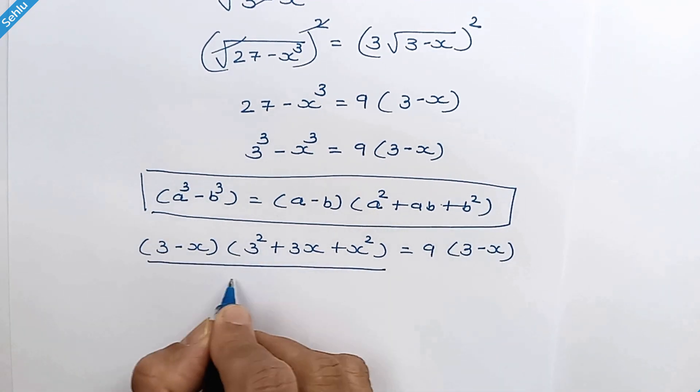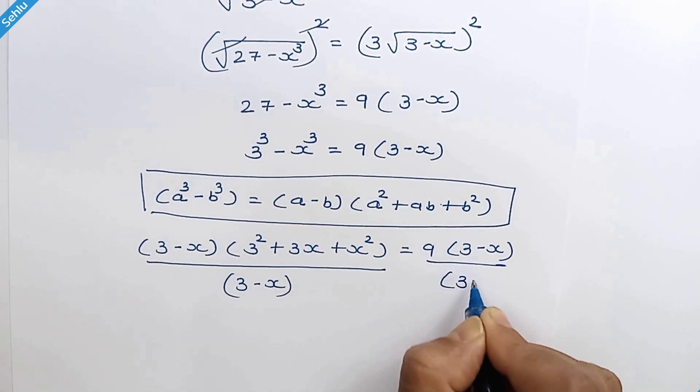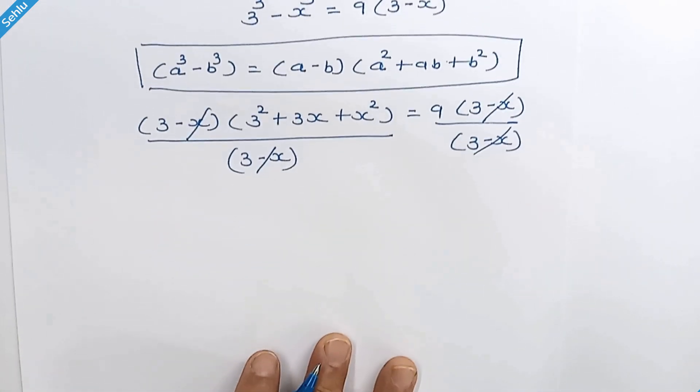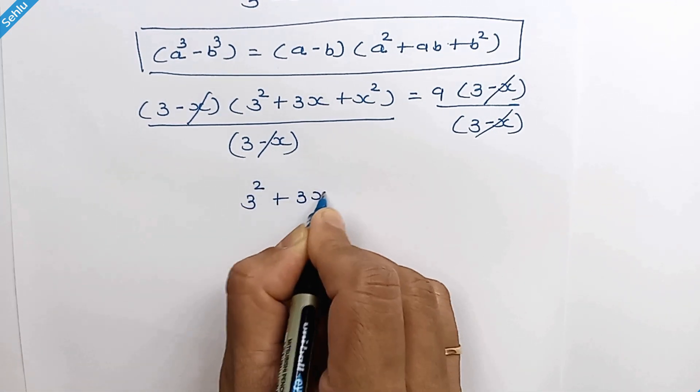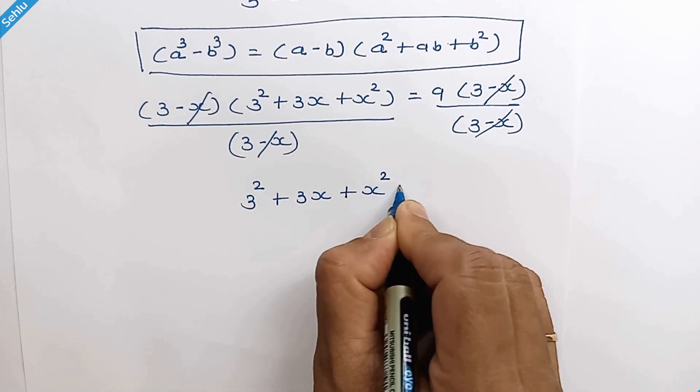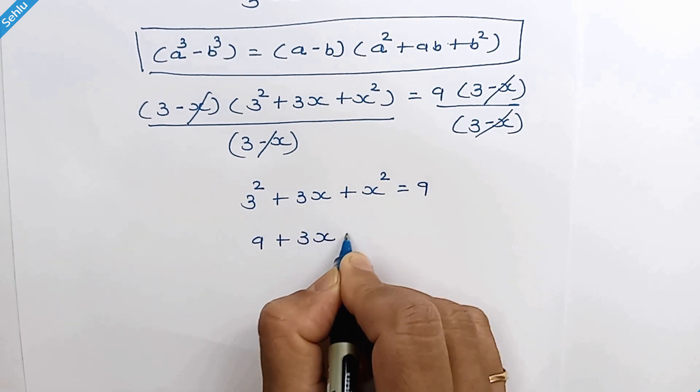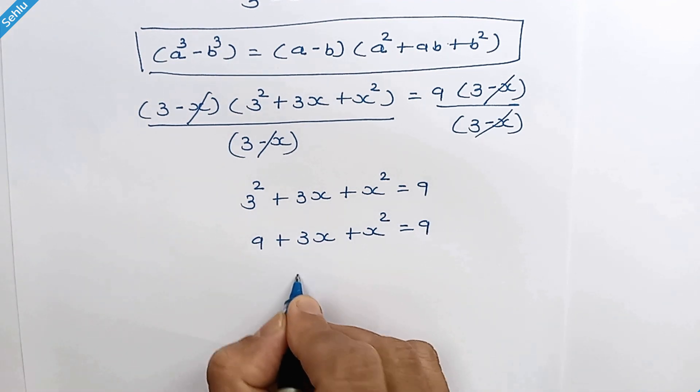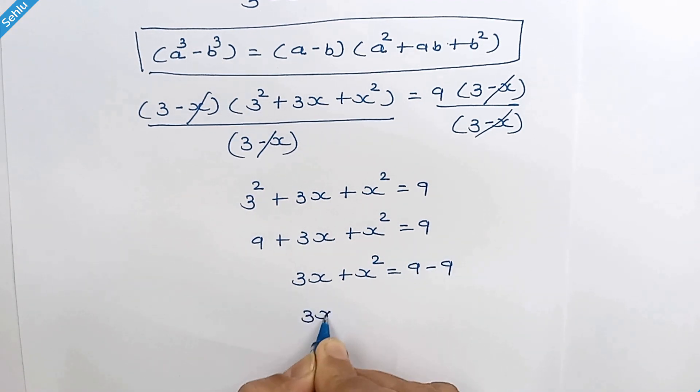Now we will divide with 3 minus x on both sides. So these two will cancel each other. Now we have 3 squared plus 3x plus x squared equals 9. 3 squared is 9. Move this 9 to right hand side. So we have 3x plus x squared equals 0.